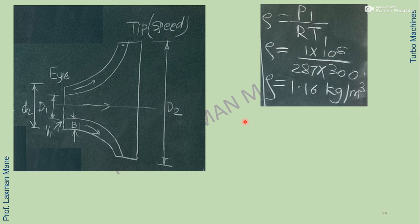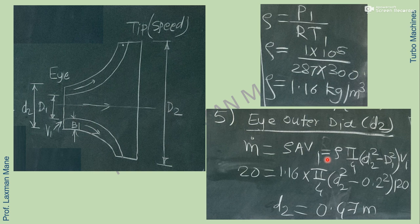To find the outer diameter of the impeller eye, first calculate density using rho equals P1 divided by (R into T1), converting pressure from bar to Pascal by multiplying by 10 raised to 5, with R for air and inlet temperature in Kelvin. Using this density in the formula M_dot equals rho into pi by 4 into (d2 square minus D1 square) into V1, and putting in all known values, we find the outer diameter d2 of the impeller eye.